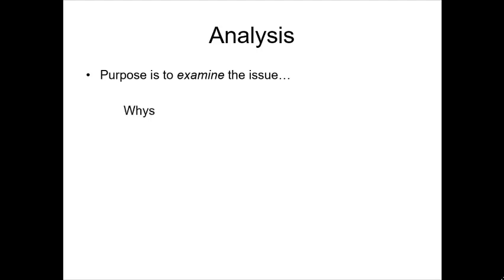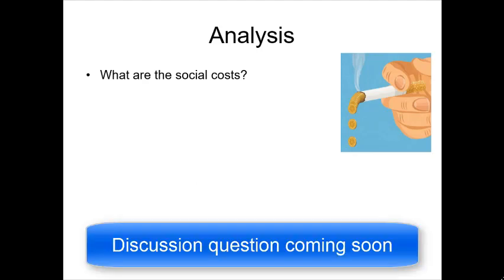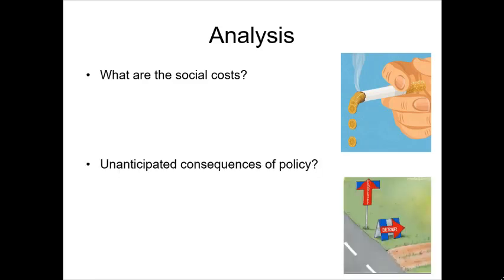You're examining the issue — trying to get to the whys, the what-fors, the how-comes, the who's who, the causes and the effects. What's causing this? Why? What perhaps are the social costs? A social cost is literally a cost to society. What are the social costs of this issue or even the policies we have in place? How are people getting around it? What are the unanticipated consequences of policy that are causing problems or creating even more social costs as a result of those policies, or the lack of policy that could be addressing this problem?